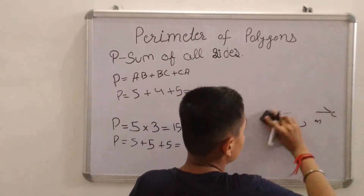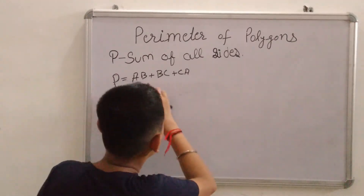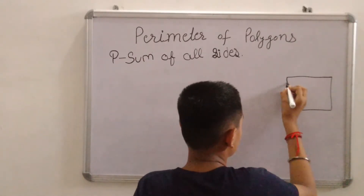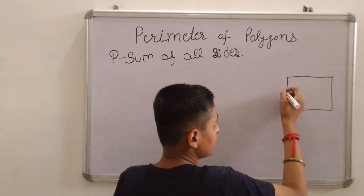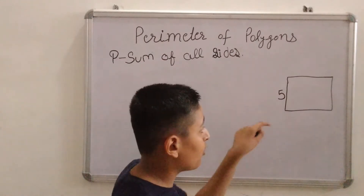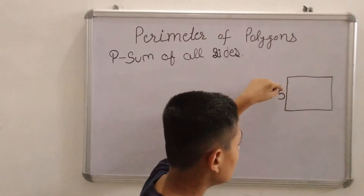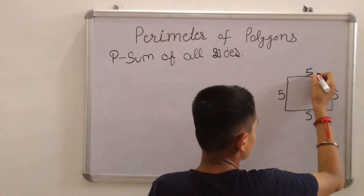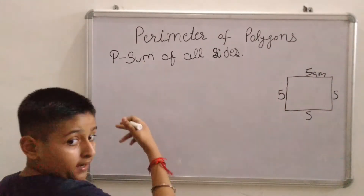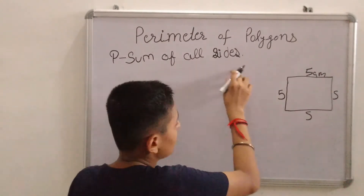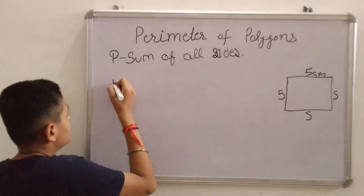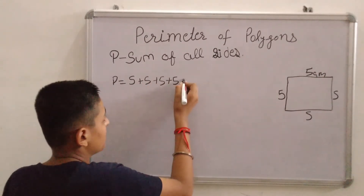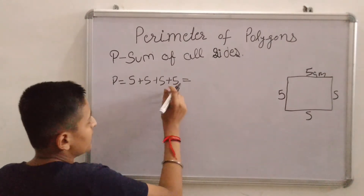Now let's take another shape called square. This is our square. The length of one side is 5 cm, and since all sides are equal in a square, all sides are 5 cm. The perimeter formula is the sum of all sides: 5 plus 5 plus 5 plus 5 equals 20 cm.